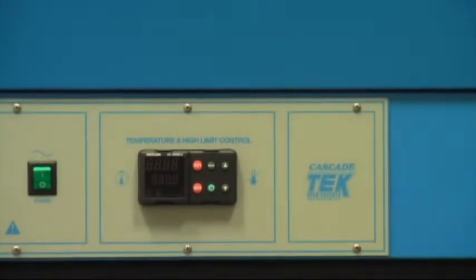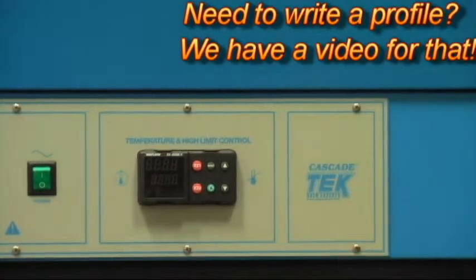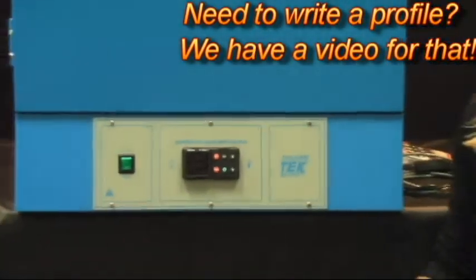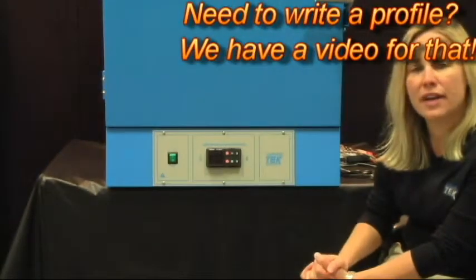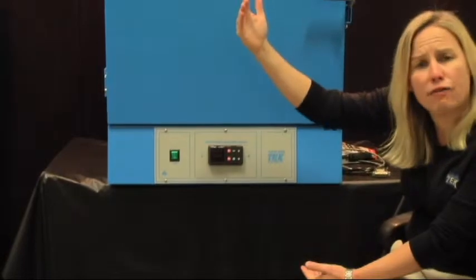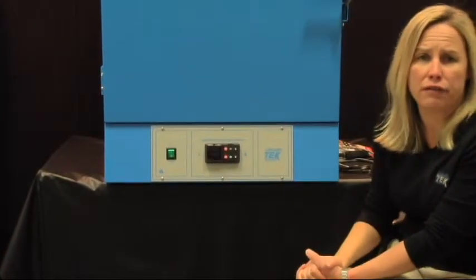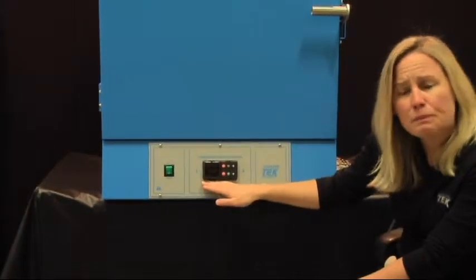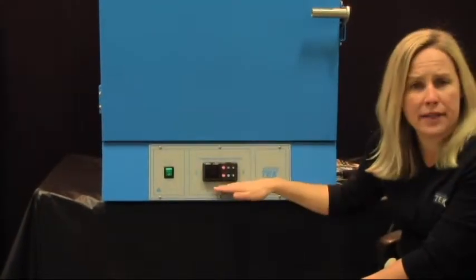So, for example, I want to start at ambient room temperature. I want the oven to go up to 100 degrees C. I'd like to stay there for four hours. And then at four hours, I'd like to go to 150 degrees C. And then at the end of that four hours, I'd like the oven to turn off. This controller is capable of doing that automatically for you if you program it.